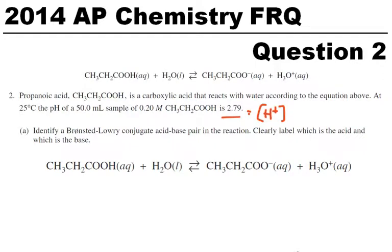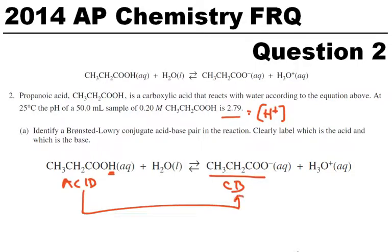Identify a Bronsted-Lowry conjugate acid-base pair in the reaction. Clearly label which is the acid and which is the base. This is our propionic acid, so obviously this is our acid — that's our proton donor. After it donates that H-plus, that proton, it becomes propionate, which is our conjugate base. So this would be our acid, and this would be its conjugate base.